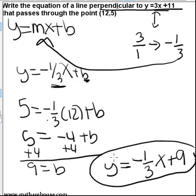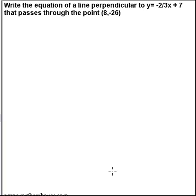Let's do one more example. Let's find the equation of a line perpendicular to y equals negative 2 thirds x plus 7 that passes through the point (8, -26). So you know our new line will have a slope that is the negative reciprocal of negative 2 thirds. So negative 2 thirds has a negative reciprocal of 3 over 2.